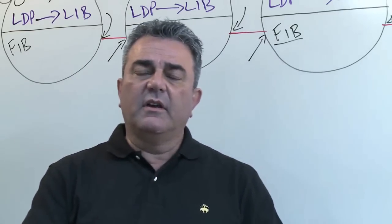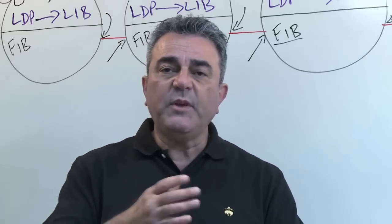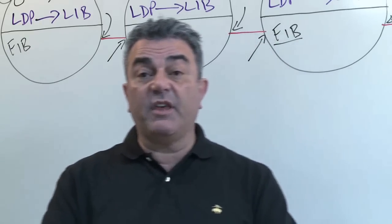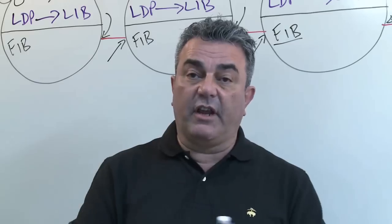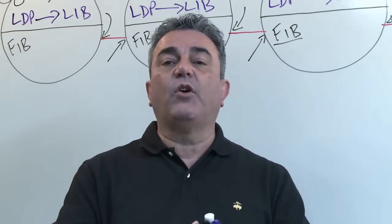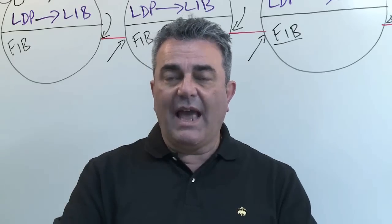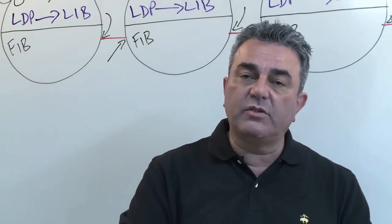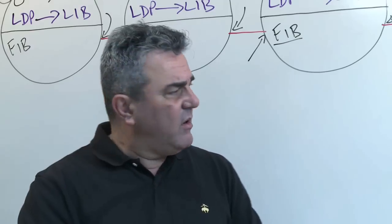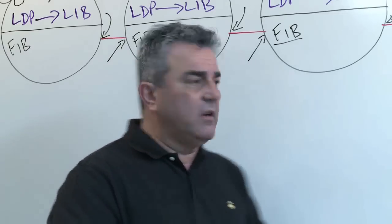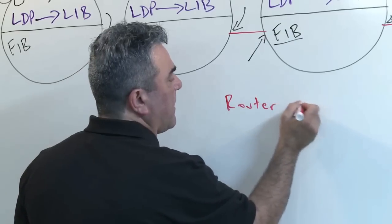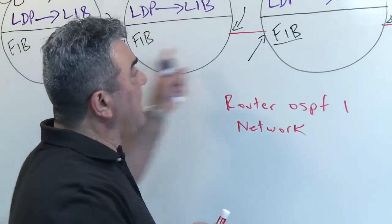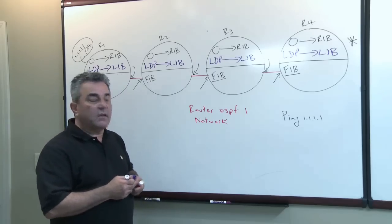In OSPF, we first do neighbor discovery, then establish OSPF adjacency with directly connected neighbors. We do the same thing in LDP. In LDP, we do neighbor discovery using UDP port 646 as the source and destination. Once we discover neighbors, we establish an LDP session using TCP port 646. How do we configure OSPF? In global config mode, we say 'router ospf [process]' and use a network statement to run OSPF on the links interconnecting the routers. We do the same thing in configuring LDP.